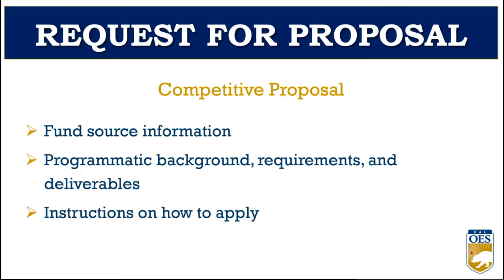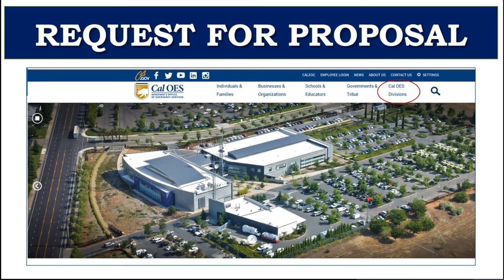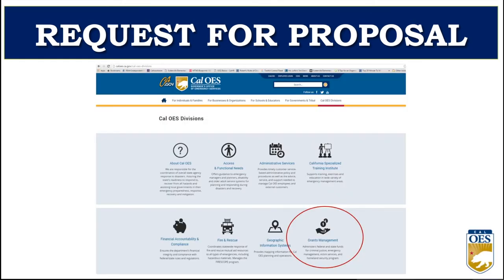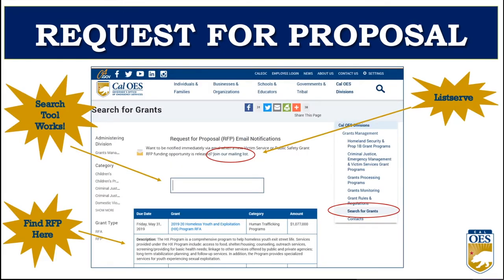The process of submitting a proposal begins with a request for proposal being released through our competitive process. Within the RFP, you will find fund source information, the background of the program, requirements, expected deliverables, and instructions on how to apply. The RFP can be found on the CalOES website at caloes.ca.gov — click the CalOES Divisions link in the upper right corner, scroll down to Grants Management, then search for grants. You may search by scrolling through the table or using the search box. We strongly encourage you to sign up for our mailing list so that you receive email notifications when a new request for proposal is released.